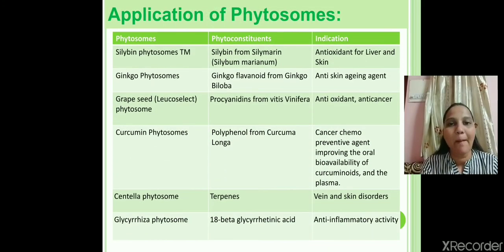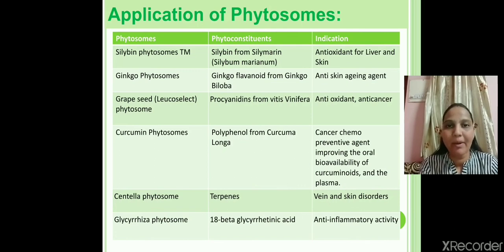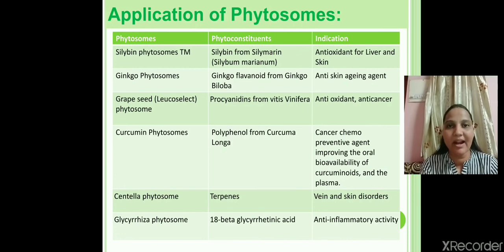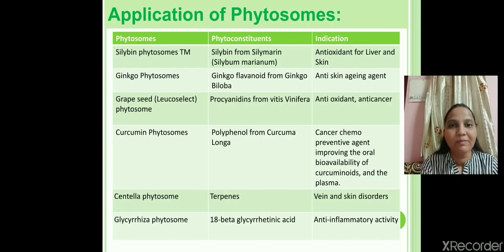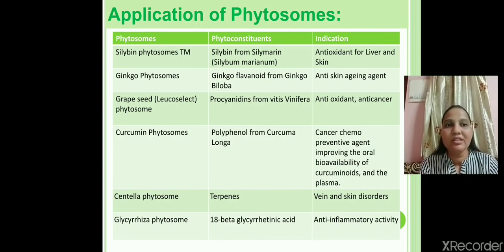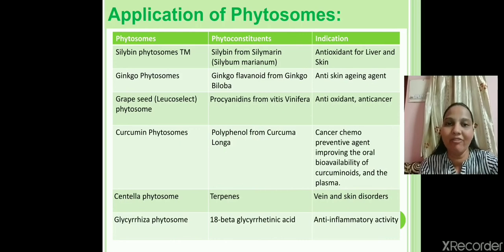Applications of phytosomes — several examples of herbal drugs in phytosomal form: first, silybinin phytosomes — silybinin is a phytoconstituent isolated from the silymarin plant and is mainly used for hepatoprotective purposes. Second, Ginkgo phytosomes — flavonoids isolated from the Ginkgo plant, which are water-soluble and surrounded by a lipid layer, used as anti-skin aging agents. Third, curcumin phytosomes — polyphenols isolated from Curcuma longa, used as cancer chemopreventive agents. Fourth, Glycyrrhiza phytosomes, which have anti-inflammatory activity.